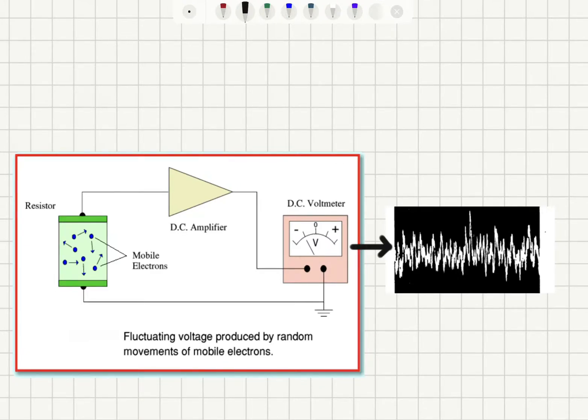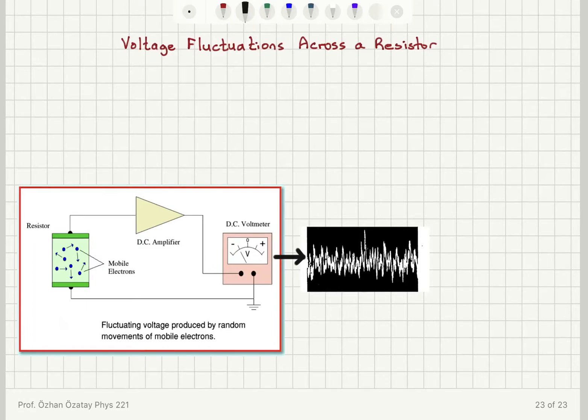The signal due to fluctuations can be small, but because the amplifier is amplifying it, it becomes easily detectable. This is basically due to the random fluctuations of the mobile electrons inside the resistor.